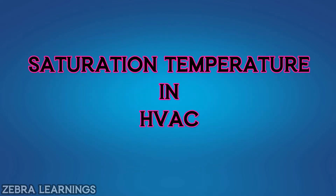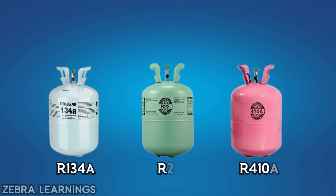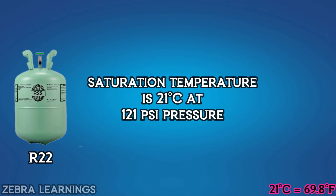Let's understand what saturation temperature is used for in the HVAC system. HVAC systems contain a lot of refrigerants, and each refrigerant has its own saturation temperature. For example, the saturation temperature of R22 refrigerant is 21 degrees Celsius at 121 PSI pressure.